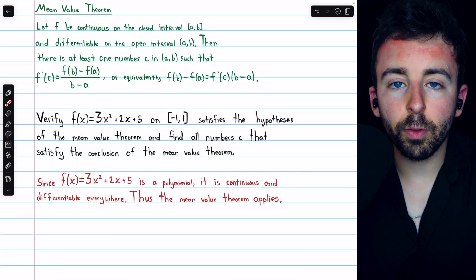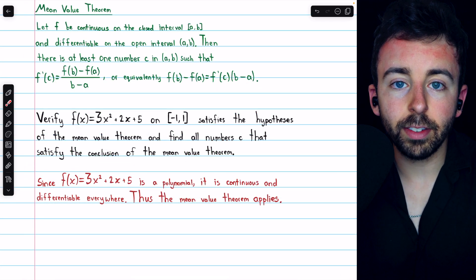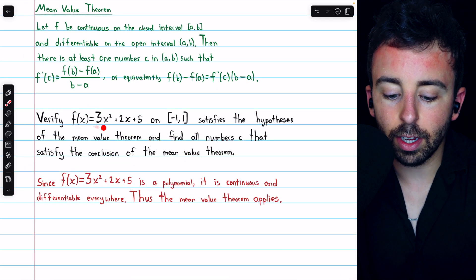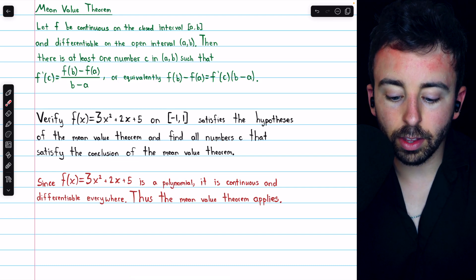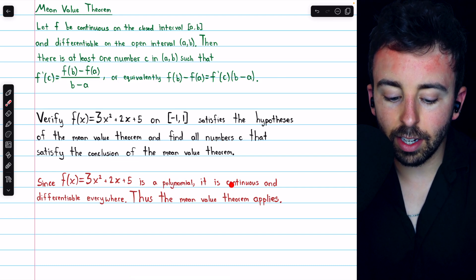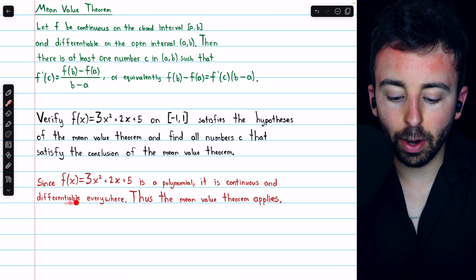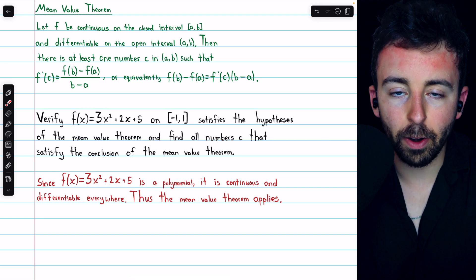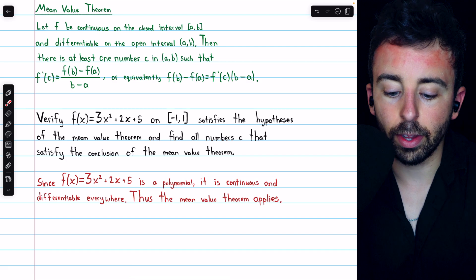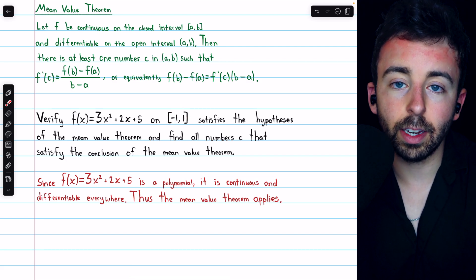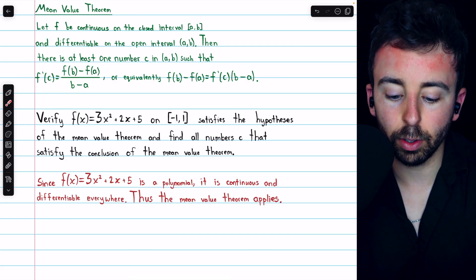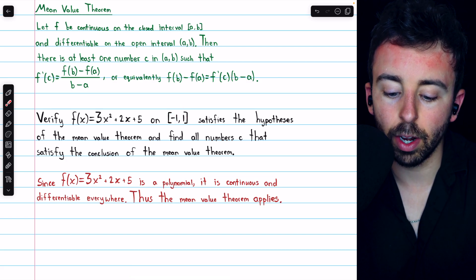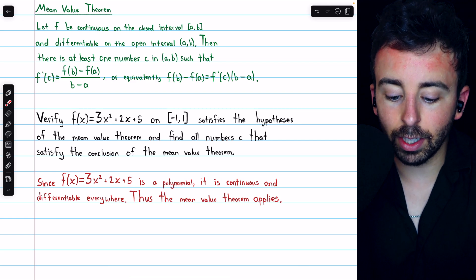In this case, verifying the hypotheses is a breeze because this function is a polynomial. Since it's a polynomial, it's continuous and differentiable everywhere. In particular, it's continuous on this closed interval and differentiable on the open interval from negative one to positive one.